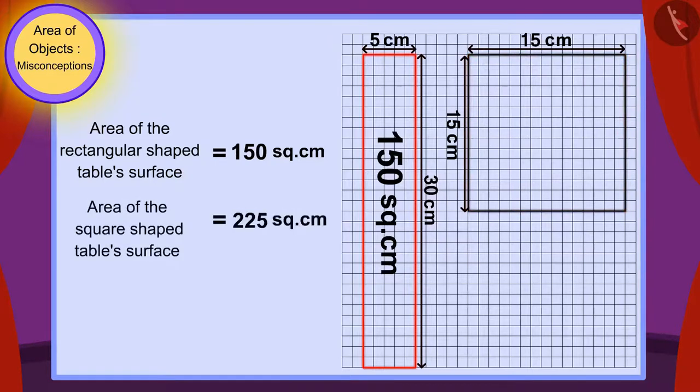And, there are 225 squares in the square-shaped table surface. Or, the area of the square-shaped table surface is 225 square centimeters.